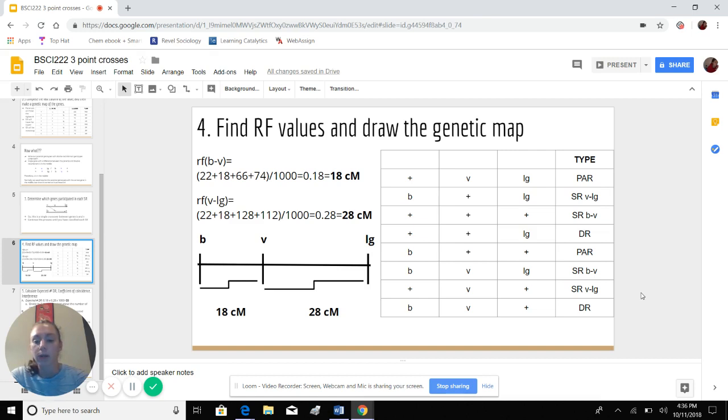So between B and V, we have B and V single recombinants laid out over here. We add the double recombinants. We're going to include the double recombinants numbers in both calculations. So we're going to do 22 plus 18 plus 66 plus 74. And those are the numbers that we have for the BV single recombinants.